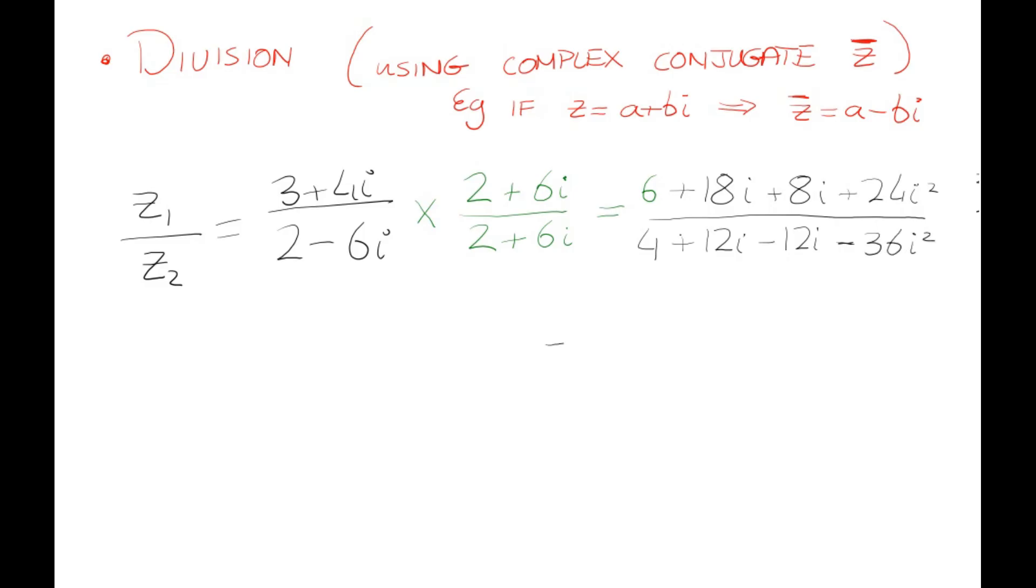Let's tidy that up. If you've done this correctly, the two i's in the middle should cancel in the denominator. On the top: 6 + 18i + 8i = +26i, plus 24 times -1 in brackets—you can just change that to -24 straight away if you want. I'm doing it this way just for your first time seeing it, the baby step version, but you can do it quicker in the exam.